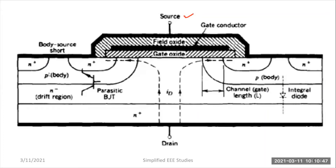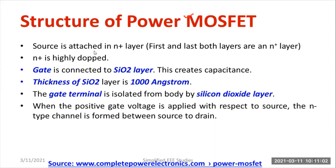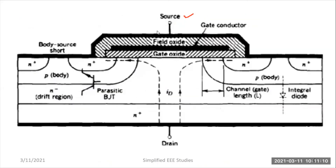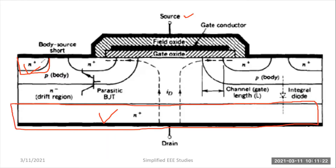Now let us explain the N plus layer and its peculiarities. You can observe that the N plus layer is at both the top side and the bottom side. The source is attached at the N plus layer — meaning the first and last layers are both N plus layers. You can observe the first layer here and the last layer here. The first and last layers are made up of N plus, meaning it is present at both the bottom and top. N plus layer is a highly doped layer.